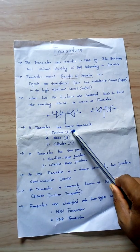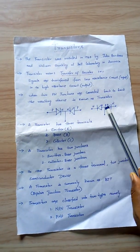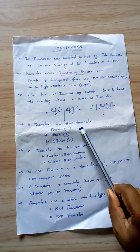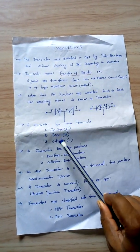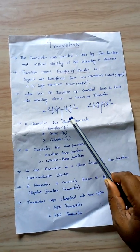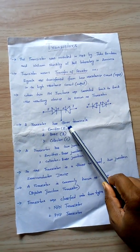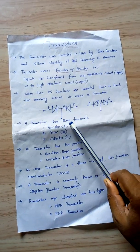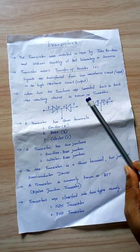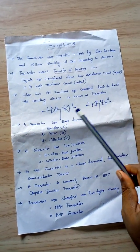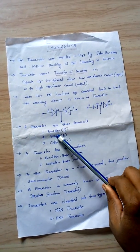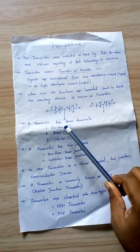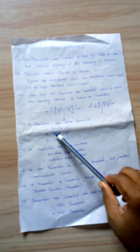The emitter is heavily doped as compared to the base and collector. The emitter supplies the majority charge carriers and it is always forward biased with respect to the base.